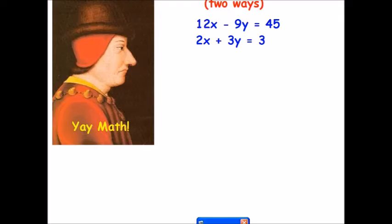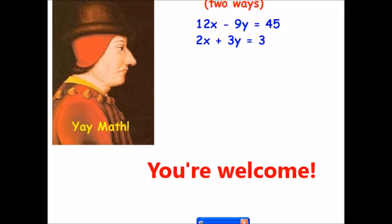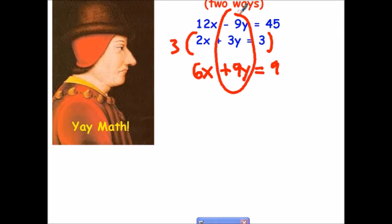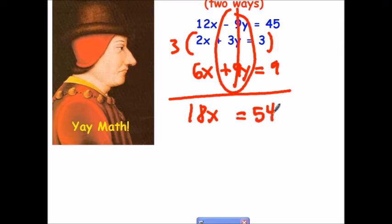Now for the next few examples, we won't do the entire problem. We'll just talk about what you would do at the beginning. This system of equations has two ways you can solve it. Probably the easiest way would be to multiply the bottom equation by a positive 3. Let's see what happens. That'll give us 6x plus 9y equals 9. I'm multiplying both sides of the equation, not just one side. And now look at what we see. We have the negative 9y and the positive 9y. So when I add it up, I'll get 18x equals 54.